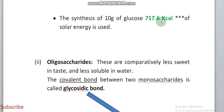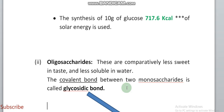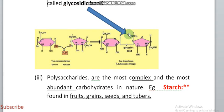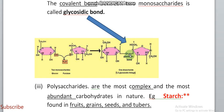It means 1 gram of glucose requires 717.6 kilocalories of solar energy. Oligosaccharides are comparatively less sweet in taste than monosaccharides and less soluble in water. They have a covalent bond between two monosaccharides and form a glycosidic bond. You can see two monosaccharides combining via a glycosidic bond to form an oligosaccharide — the hydroxyl group and hydrogen form water, which is removed, and a glycosidic bond is formed.